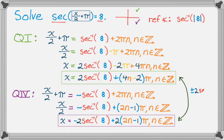So we really could have written this in a sort of simplified fashion, as plus or minus 2 inverse secant of 8, and then plus (4n minus 2) times π, where n is an element of the integers. So you could have done that, but you didn't have to.